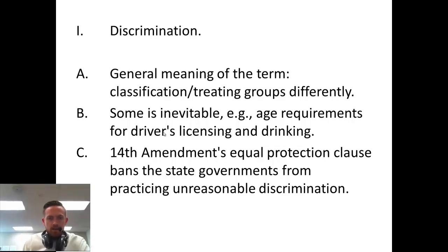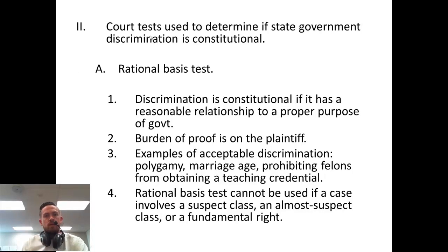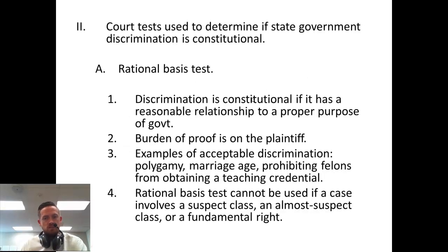Not letting someone drive until they're 16 or 17 — that's reasonable. Not letting somebody vote because they're black — that's unreasonable. Court tests have been used to determine if state government's discrimination is constitutional. There's the Rational Basis Test, which says discrimination is constitutional if it has a reasonable relationship to a proper purpose of government.